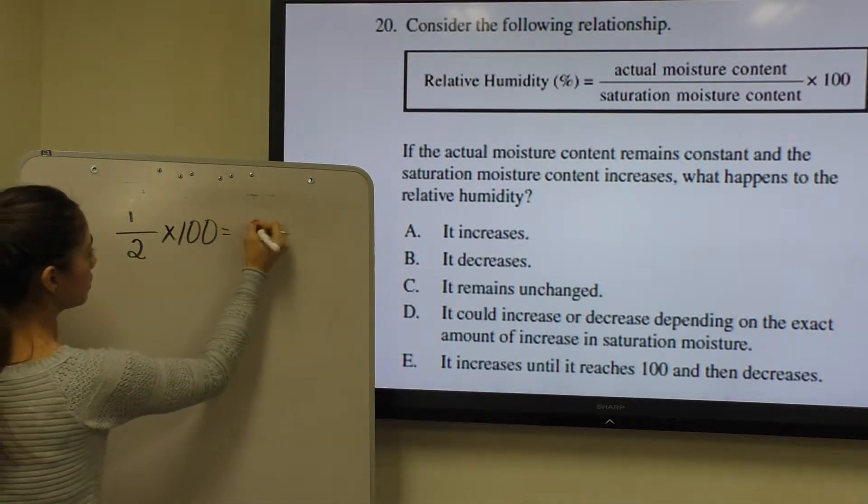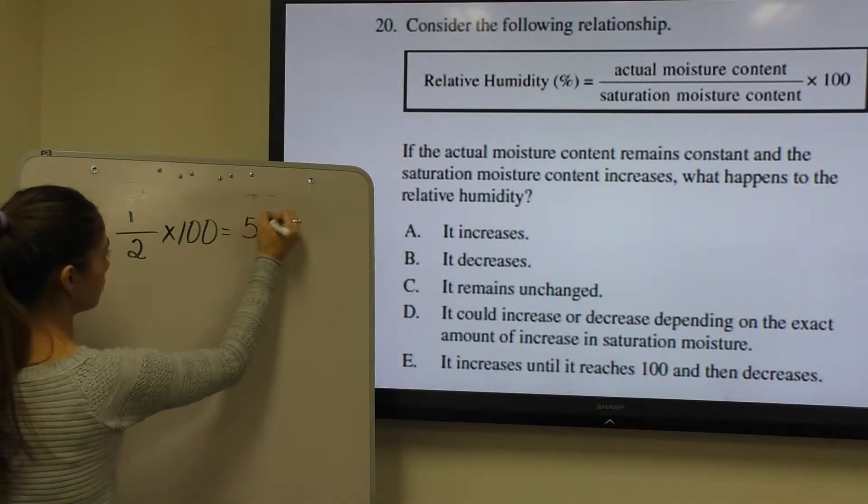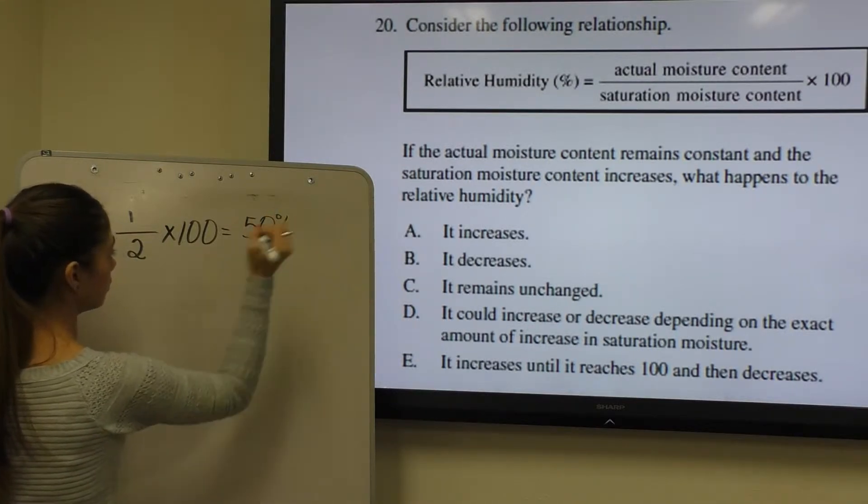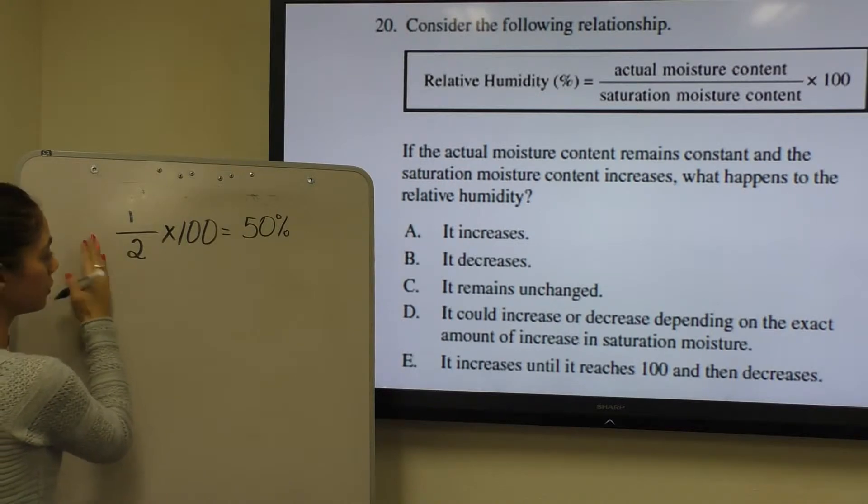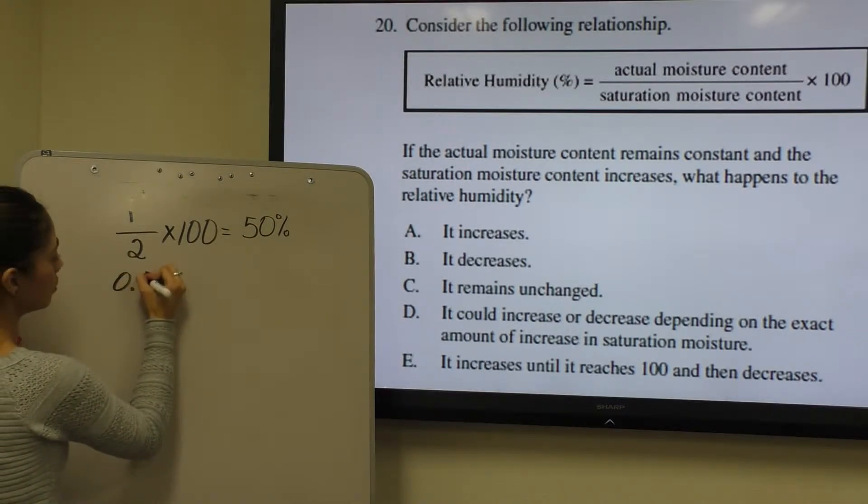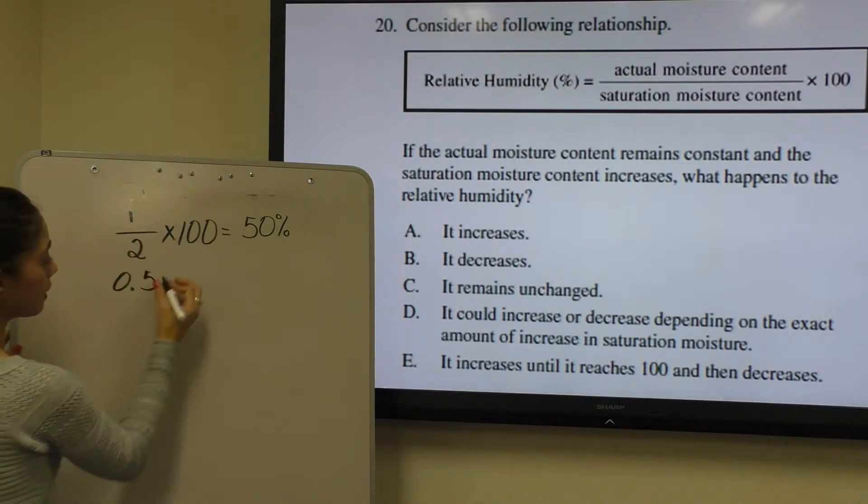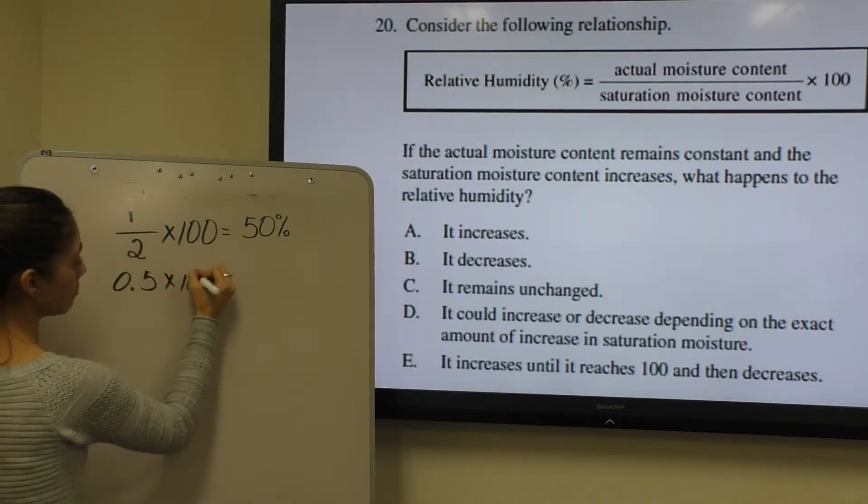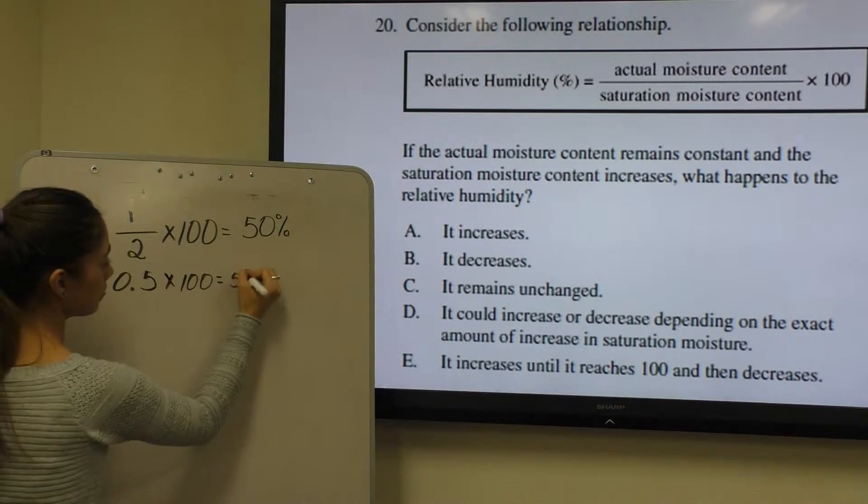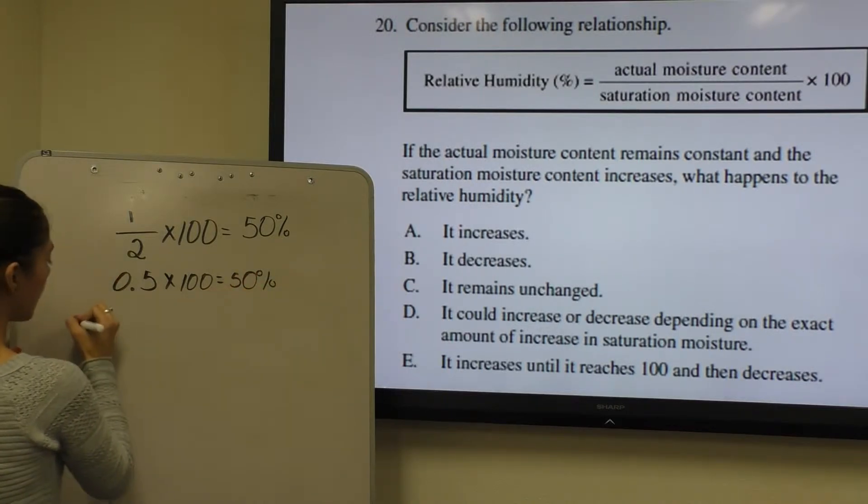This would give us a total of 50% because 1 half, I can work it down here, 0.5. 1 divided by 2 is 0.5 and when you multiply it by 100, that's where I got my 50%.